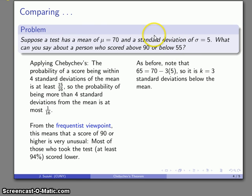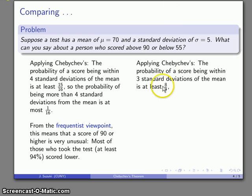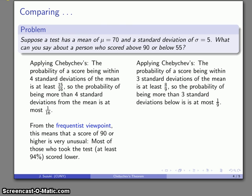Well, I can do the same sort of analysis for the person who scored 55. So in this case, we'll note that 55 is three standard deviations below the mean. Chebyshev tells me that the probability that I'm within three standard deviations of the mean, 1 - 1/3², works out to be 8/9. And so the probability of being more than three standard deviations below the mean is, at most, 1/9. If 8/9 of the scores, at least, are within three standard deviations, then at most 1/9 is going to be outside of that three standard deviation interval.